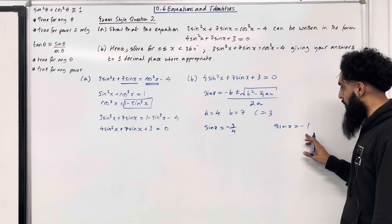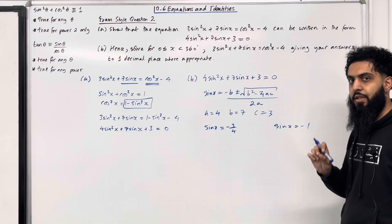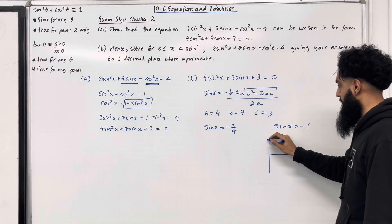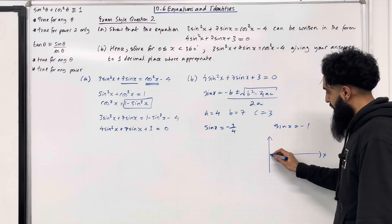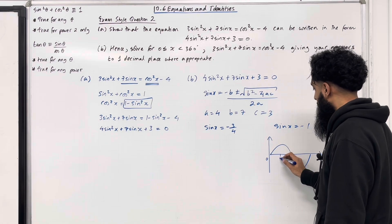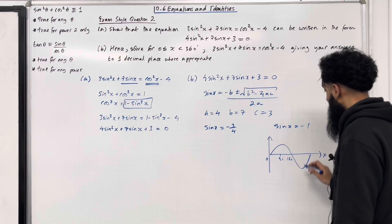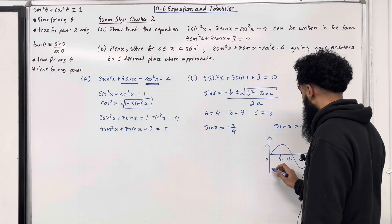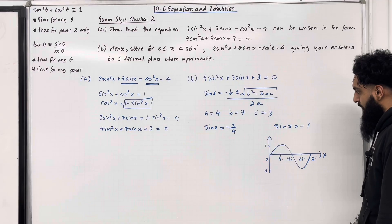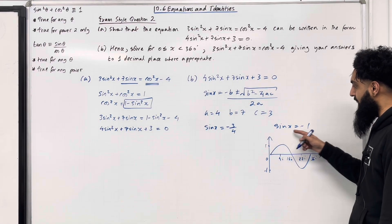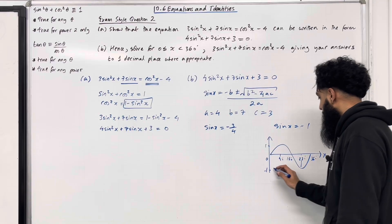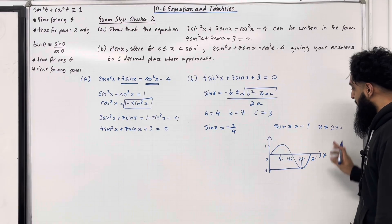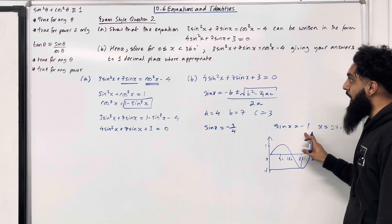Let's start by solving sin x = −1. We can quickly solve this by sketching the graph of y = sin x in the interval 0° to 360°. The graph has a maximum of 1 and minimum of −1. Sin x = −1 when x = 270°. So x = 270° is the solution of sin x = −1 in this interval.